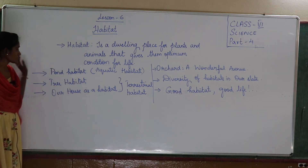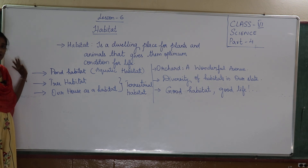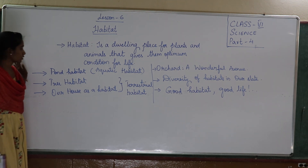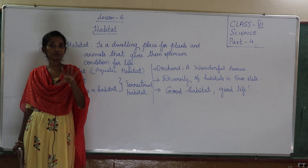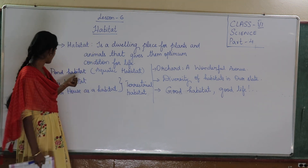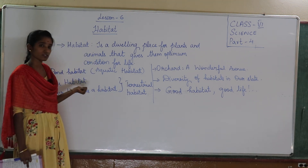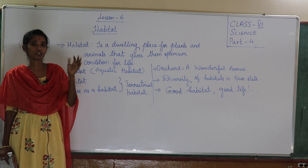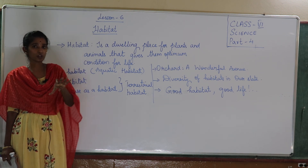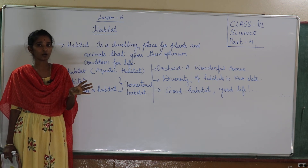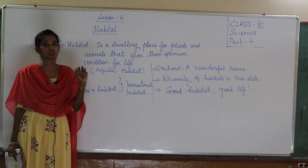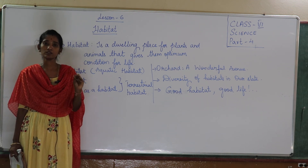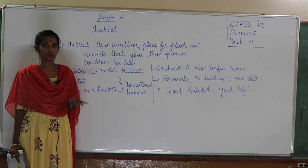This was your lesson. Go through your lesson, read your lesson — you will understand more and more. Prepare a chart of a particular plant, a bit of a pond habitat, and find out what are the animals and plants which are living inside and outside. You can make a note of it in your notebook. Thank you, children.